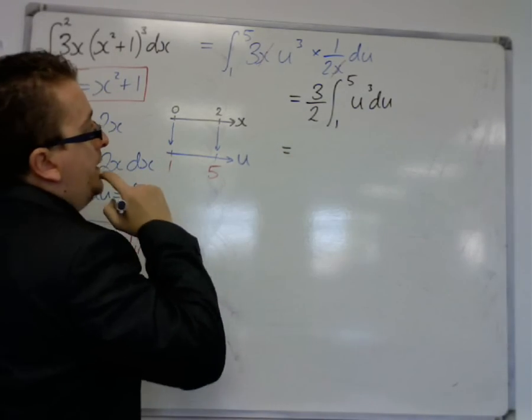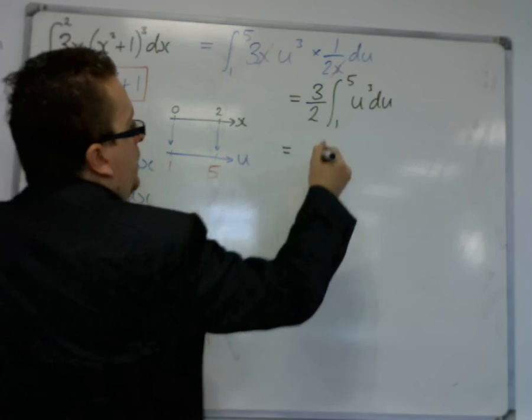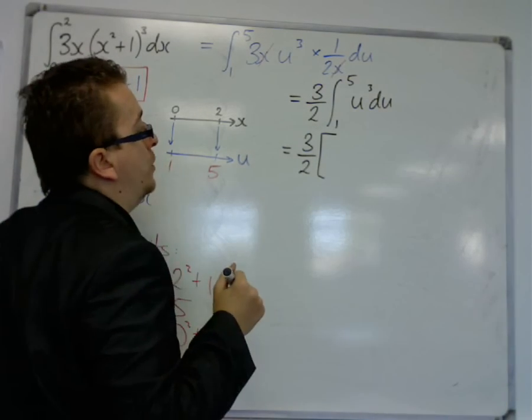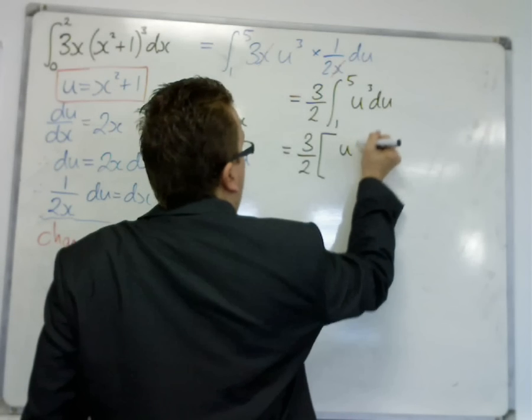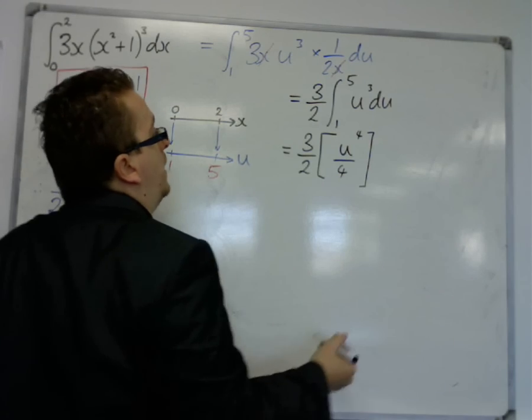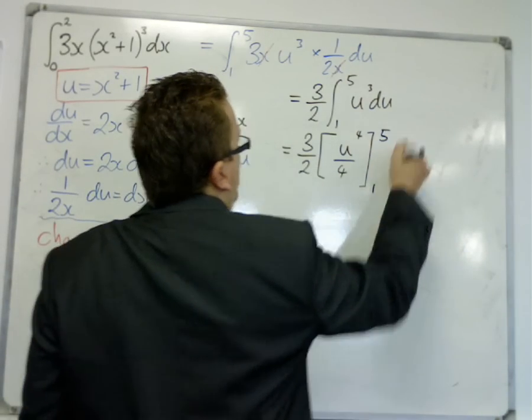So, this is now a core 1 problem. So we've got 3 halves, remember the notation, square brackets, add 1 to the power, divide by the new power. We've got no constant of integration required here. And we're integrating between 1 and 5.